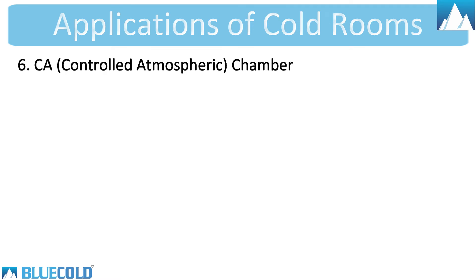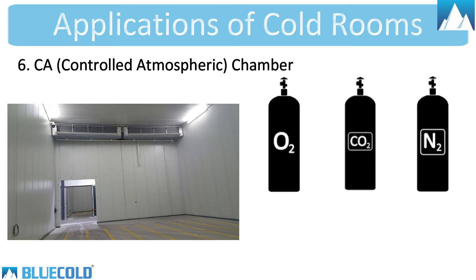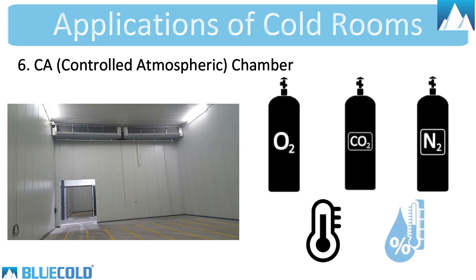6. Controlled Atmospheric Chamber — it is an agricultural storage method in which the concentrations of oxygen, carbon dioxide and nitrogen, as well as the temperature and humidity of a storage room, are regulated. Both dry commodities and fresh fruits and vegetables can be stored in this chamber.